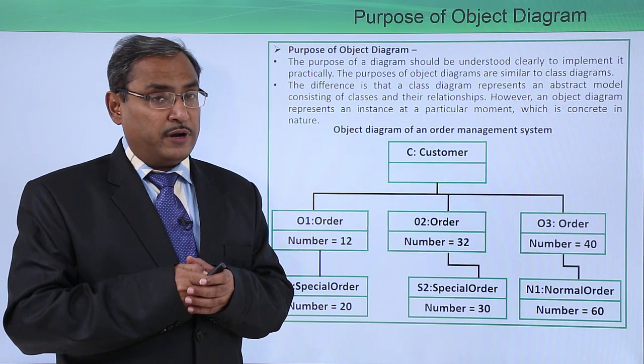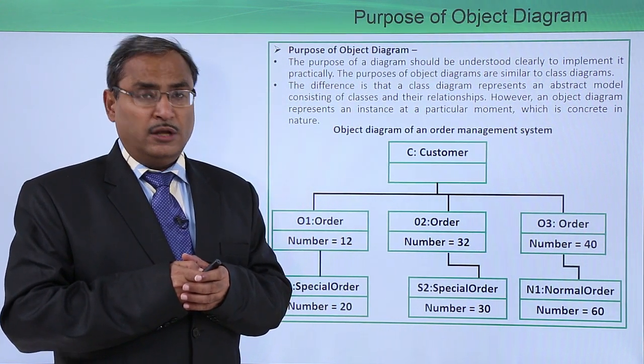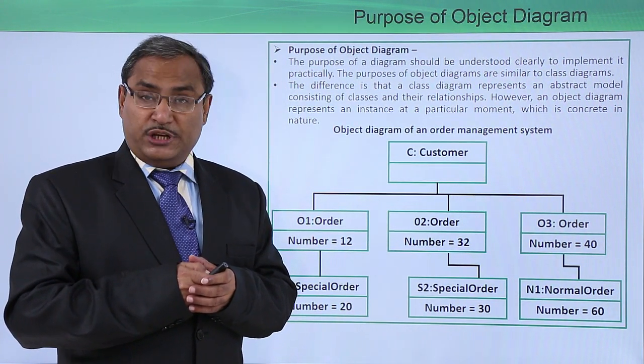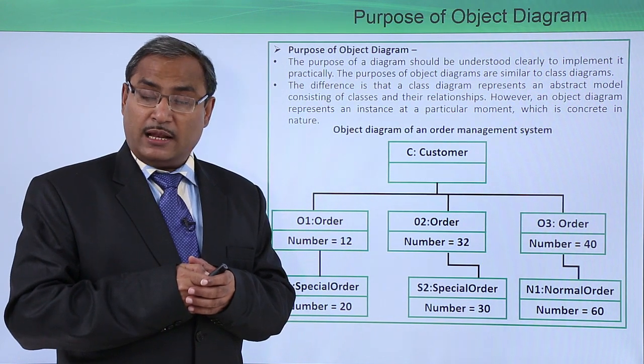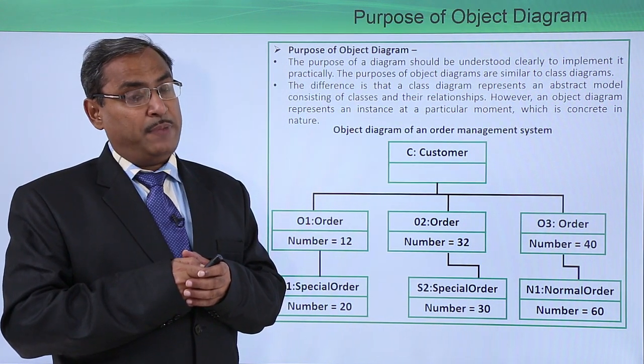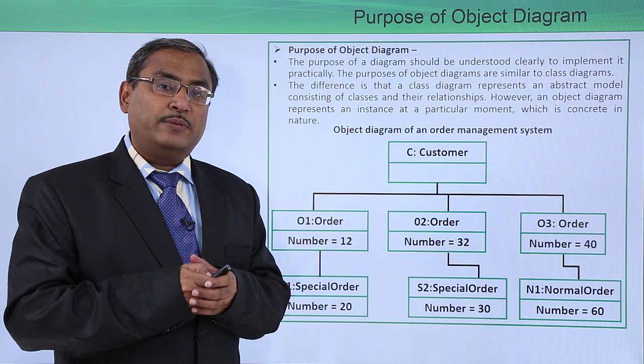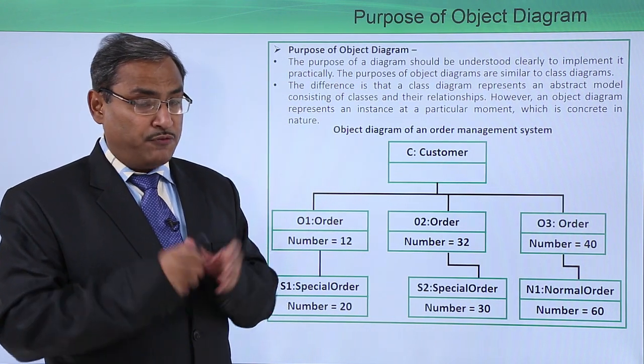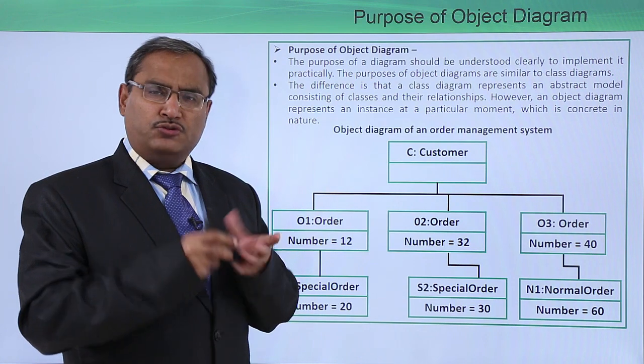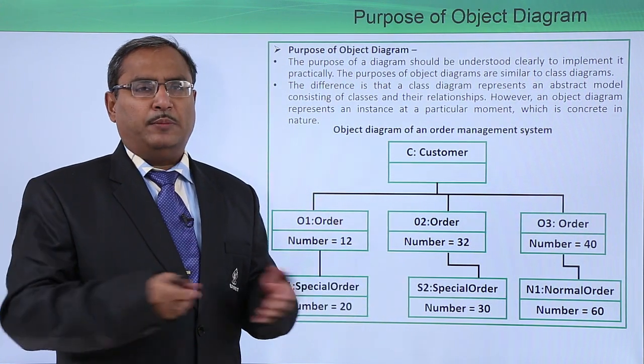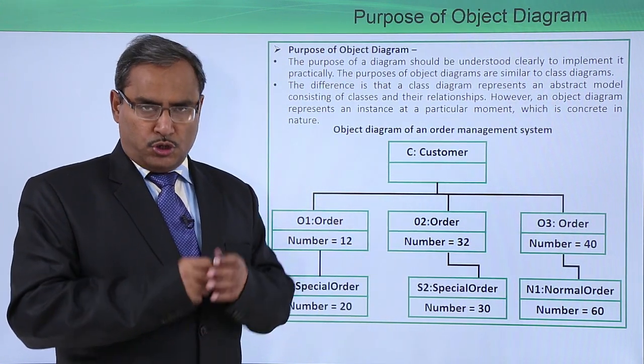We discussed there are four different types of relationships: association, generalization, dependency, and aggregation. All of them will be applicable in our object diagram also. To know about their detailing with examples please watch the class diagram videos.